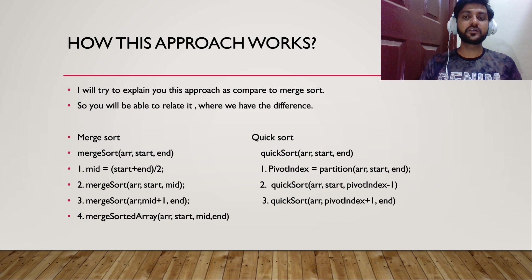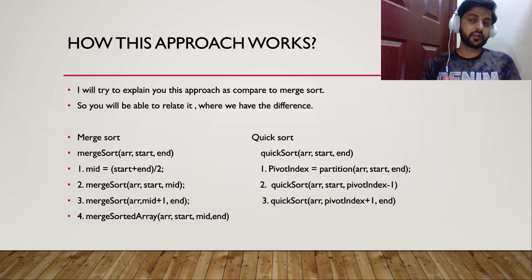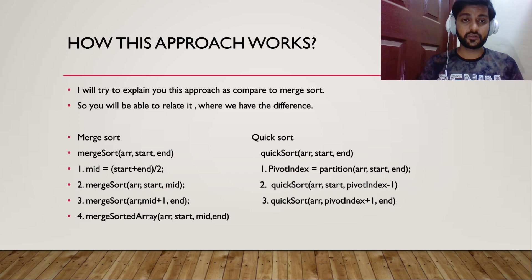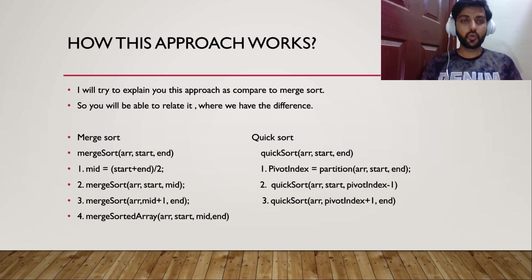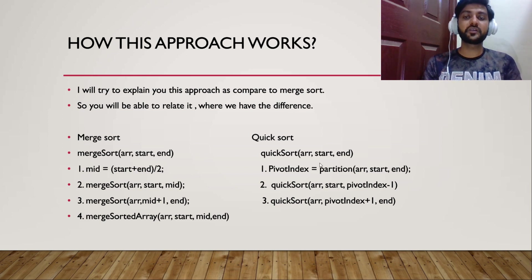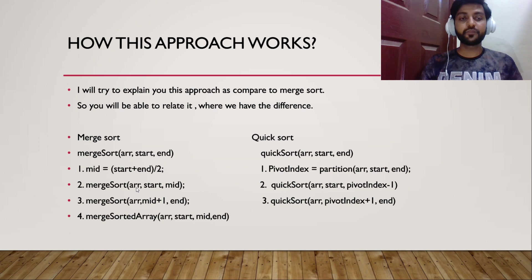In MergeSort, the first step is to find the mid element: (start + end) / 2. But in QuickSort, instead of a mid element, we get a pivot index. To get the pivot index, we call a partition algorithm. This partition algorithm places the pivot element at its correct position such that all elements to the left of the pivot index are smaller, and all elements to the right are greater. In MergeSort we always split in half, but in QuickSort the pivot index may not be the middle.